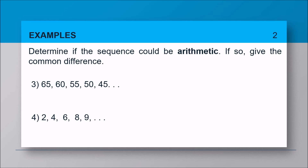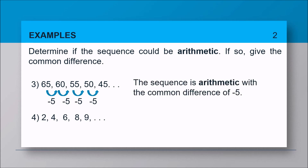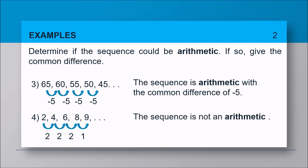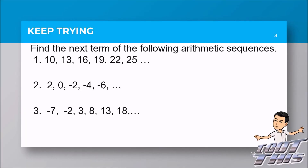For number three, getting the common difference from consecutive terms gives negative 5, so the sequence is arithmetic with a common difference of negative 5. For number four, checking consecutive terms gives differences of 2, 2, 2, but the last two terms give a difference of 1, so the sequence is not arithmetic.